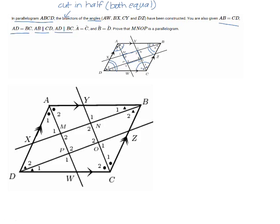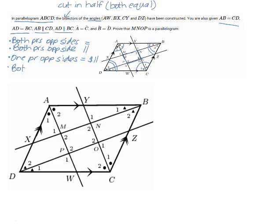When trying to prove a parallelogram, there are a number of ways to do it. One way is to prove that both pairs of opposite sides are equal, or that both pairs of opposite sides are parallel. You could also prove that one pair of opposite sides are both equal and parallel, or that both pairs of opposite angles are equal.